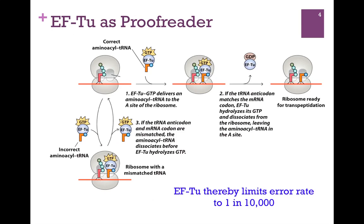Although it's the ribosomal RNA that confirms that the interaction is correct, our actual proofreader is EFTU, and that's illustrated here. Here we have our growing chain on the tRNA in the P site, and EFTU is delivering the next tRNA to that A site. Those two A residues in the rRNA are going to make sure that that interaction is correct. EFTU will then hydrolyze GTP, then release bound to GDP, and we can begin the process of transpeptidation.